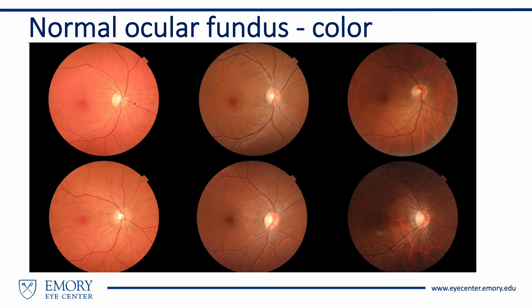The macula is the slightly darker central part of the retina and provides the highest spatial resolution for visual functions. The normal human retina is transparent. The color observed on fundus photographs is a reflection of the underlying choroidal vasculature. As the amount of melanin pigment in the retinal pigment epithelium increases, the background becomes darker.